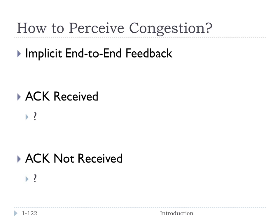If the TCP sender gets an acknowledgement back, that says there doesn't seem to be any congestion. Whereas if an acknowledgement is not received, that implies there's some kind of loss going on and maybe it's because the network is congested. If an acknowledgement is not received, the sender needs to cut back and slow down. Whereas if an acknowledgement is received, it might say there's more available bandwidth that it could take advantage of.